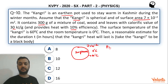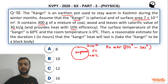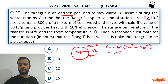From the Stefan-Boltzmann law, the net rate of power loss is: P = eσA(T⁴ − T₀⁴). The surface temperature is 60°C, which converts to 333 K, and the room temperature 0°C converts to 273 K. Since it is a black body, e = 1, and surface area A = 7 × 10⁻² m².